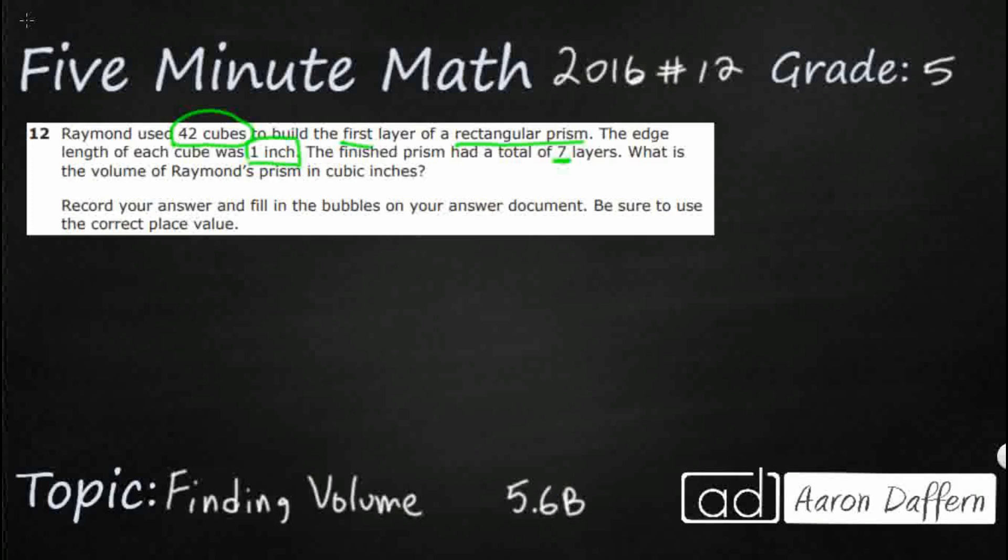All right, there's no picture, and there's not even any answer choices to choose from. So we are going to have to draw a picture, and then we're going to have to bubble it in ourselves. So let's see if we can draw a rectangular prism. I'm just going to kind of attempt to draw one over here, and we'll see what we can do.